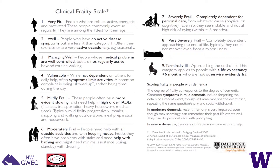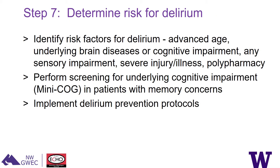The next step is to determine the risk of delirium. You want to identify risk factors the patient has, such as advanced age, underlying brain diseases like Parkinson's, cognitive impairments such as Alzheimer's, sensory impairments like vision or hearing loss, underlying severity of illness, and polypharmacy. In patients where there is concern about memory, it's important to perform cognitive screening such as with the MiniCog, with further testing if abnormal. This also provides an opportunity to implement delirium prevention protocols for at-risk patients.